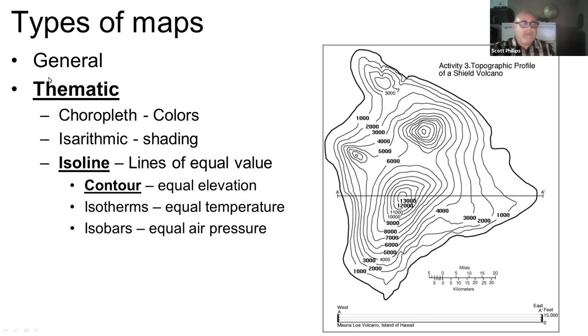Now, we have general maps and we have thematic maps. Thematic maps convey data. They can convey data in different ways. A choropleth uses coloring. Isarithmic uses shading. And we have something called an isoline map that uses lines of equal value. Among isoline maps, there are different subtypes. There are isotherm maps that have lines of equal temperature, isobar maps that have lines of equal air pressure, and like our example here, we have a contour map with lines of equal elevation.